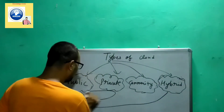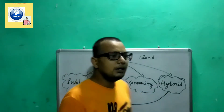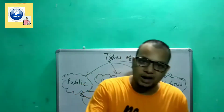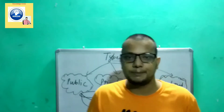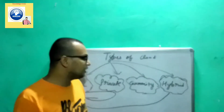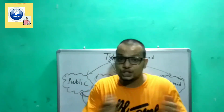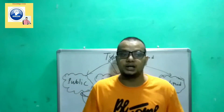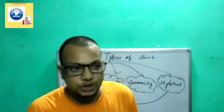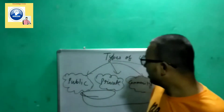The last type is hybrid cloud. Hybrid combines both public and private clouds. When critical situations arise it works like a private cloud, and when the situation is non-critical it works like a public cloud. These are the four categories of cloud.